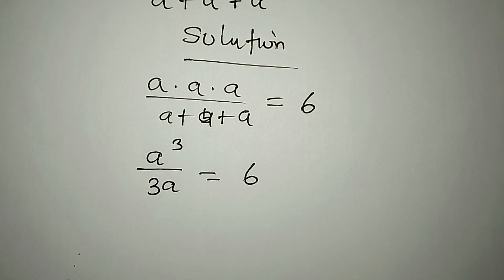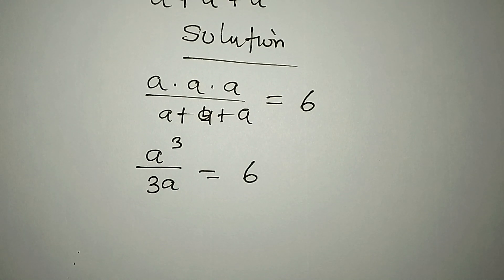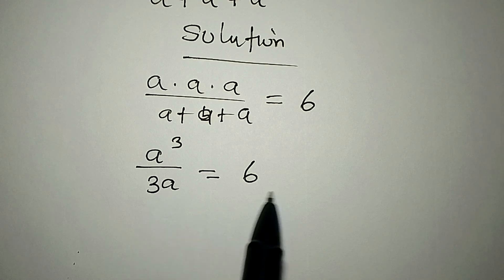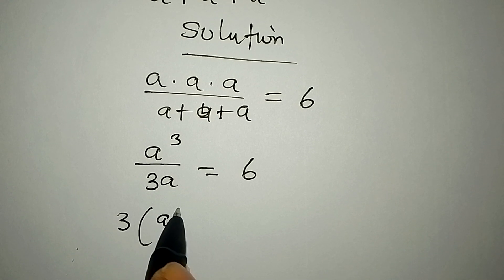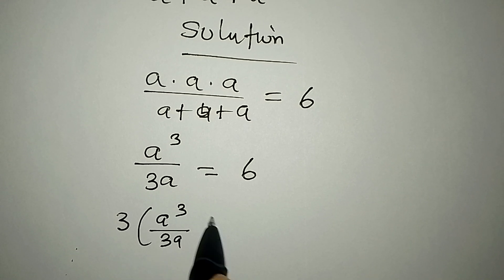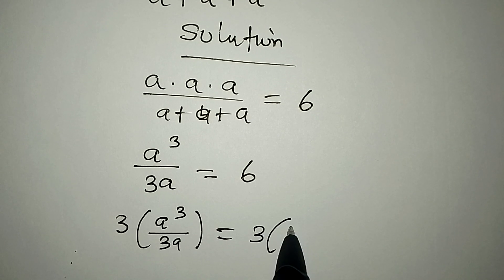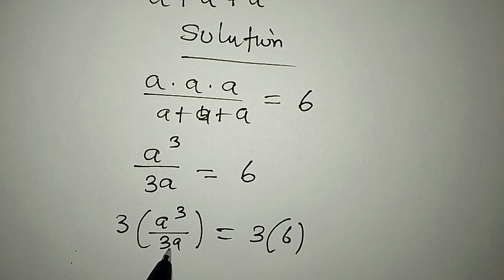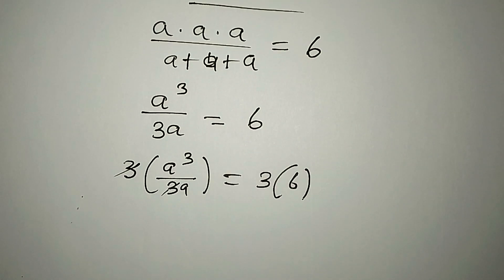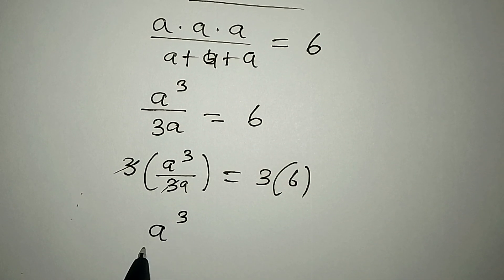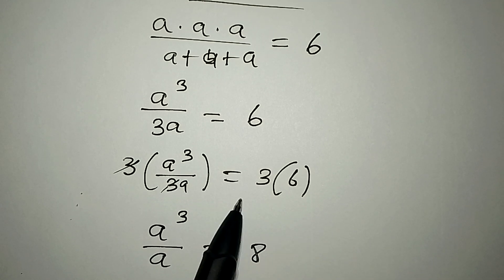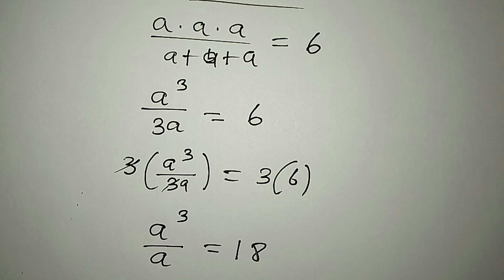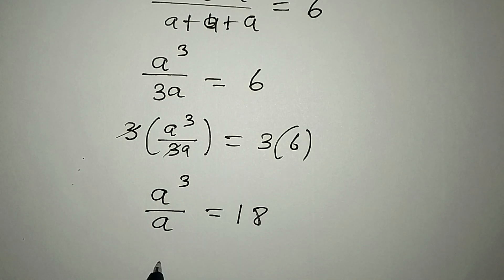From here, we can multiply both sides by 3. So we have 3 multiplied by a³ over 3a, equal to 3 multiplied by 6. The 3s cancel, and now a³ over a equals 18, because 3 times 6 is 18.